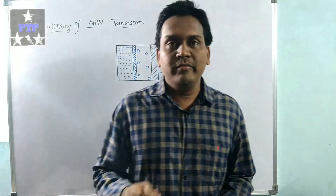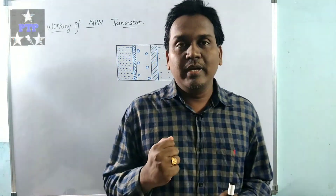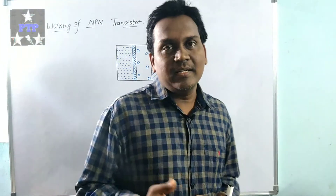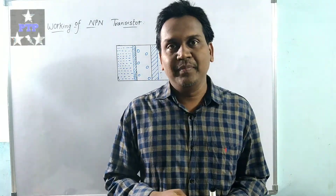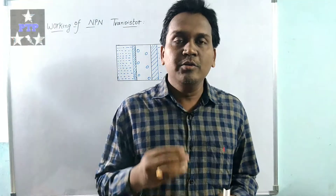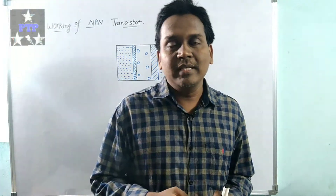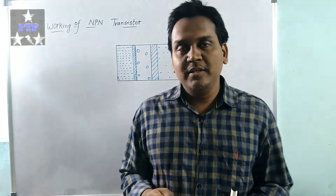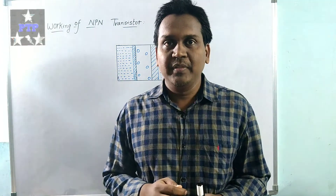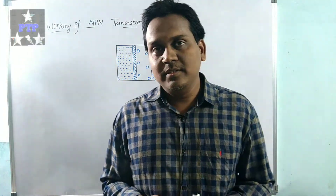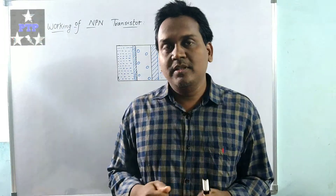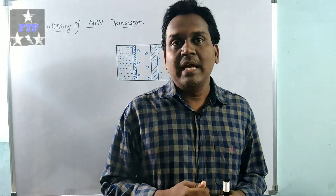We are going to discuss the working of NPN transistor. In the previous class we looked at what is meant by a transistor. Transistors are made up of semiconductors like silicon or germanium, and are widely used in electronic devices such as TVs, radios, and mobile phones. Wherever electronic devices are used, transistors are there. Mainly the transistor is made up of a PN junction diode. There are two types of transistors: NPN transistor and PNP transistor. The most effective transistor is the NPN transistor.